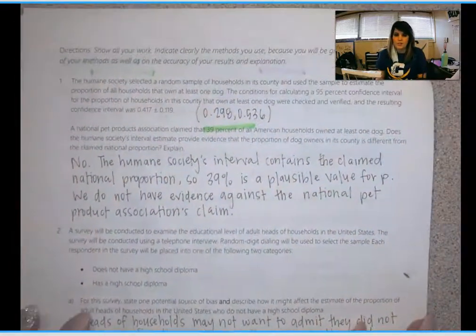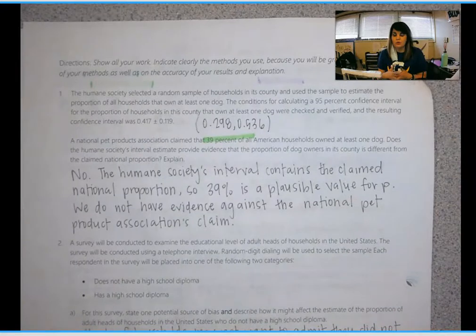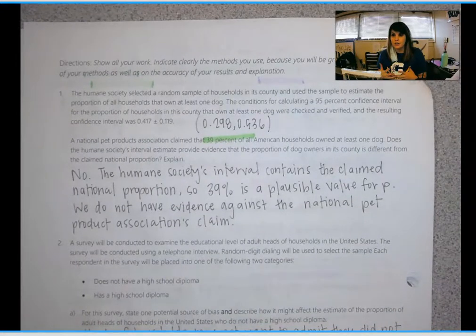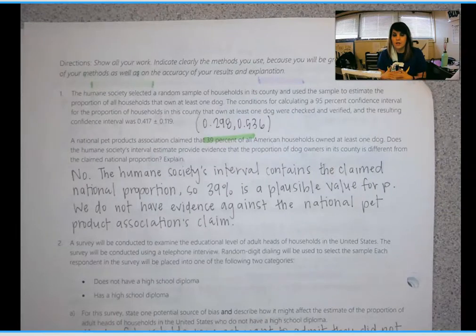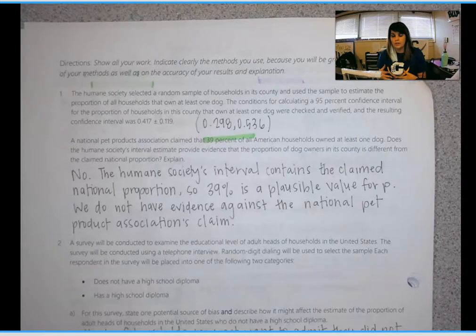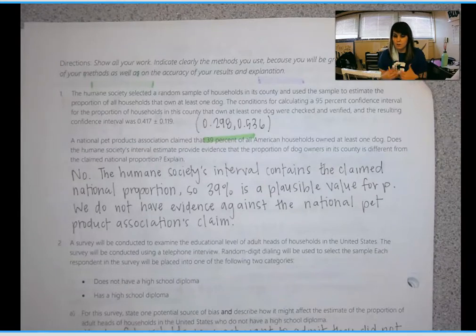Number one, I'm hoping was easier for you guys after the multiple choice questions that ask you to evaluate a claim. So the pet association has a claim of 39%. And all you need to do is check to see if that value is in the interval. If it is, then the claim is plausible.